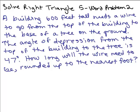All right, we're going to solve another word problem using the techniques of solving right triangles. A building 600 feet tall needs a wire to go from the top of the building to the base of a tree on the ground. The angle of depression from the top of the building to the tree is 47 degrees. How long will the wire need to be rounded up to the nearest foot?